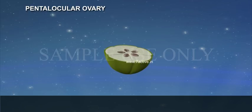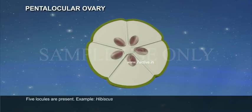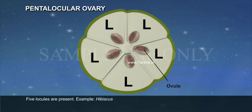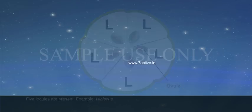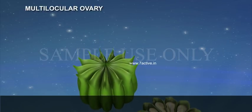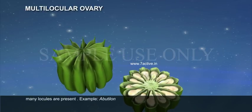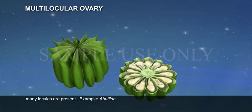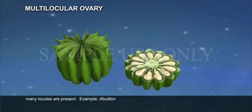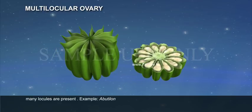Pentalocular ovary: five locules are present, example Hibiscus. Multilocular ovary: many locules are present, example Abutilon.